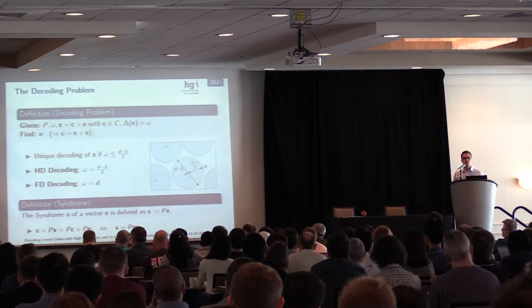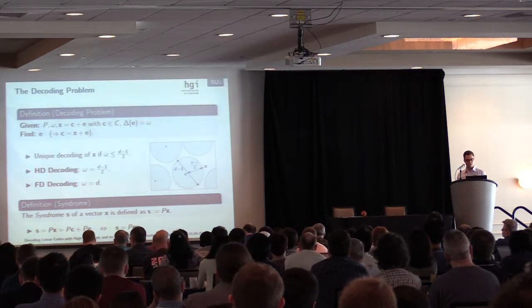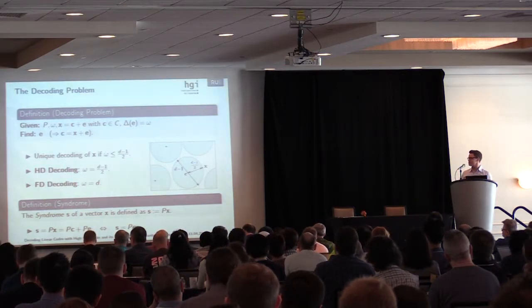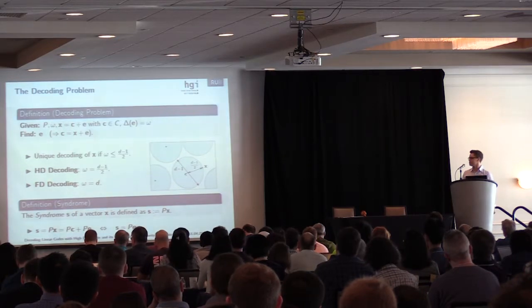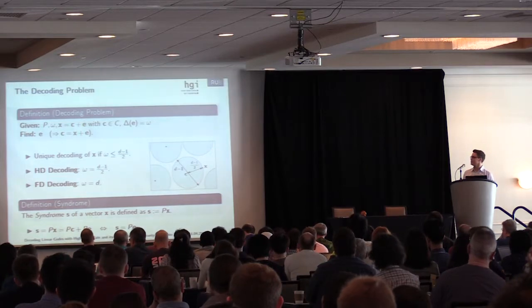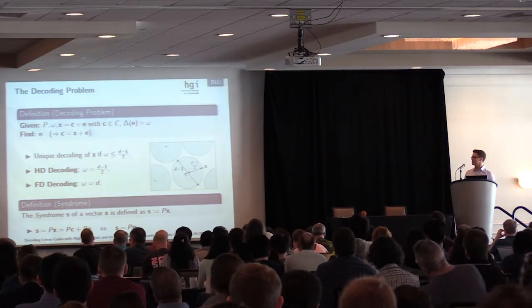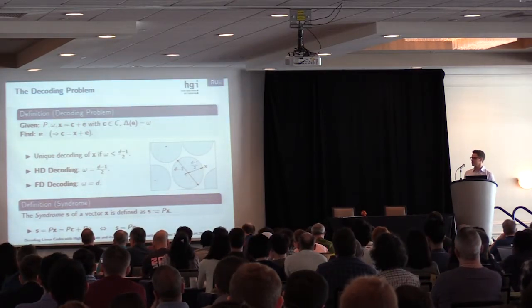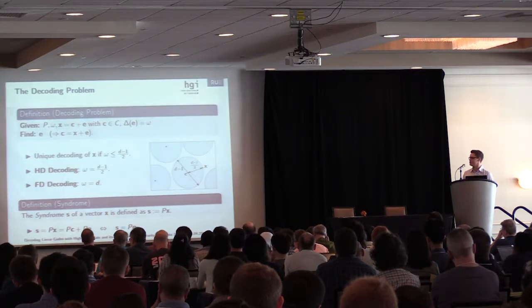For every vector x, we can also define the syndrome S simply as H times x. This syndrome has an important property, because if x is the sum of some code word c and an error e, then S becomes H times e only, because H times c is zero by definition.